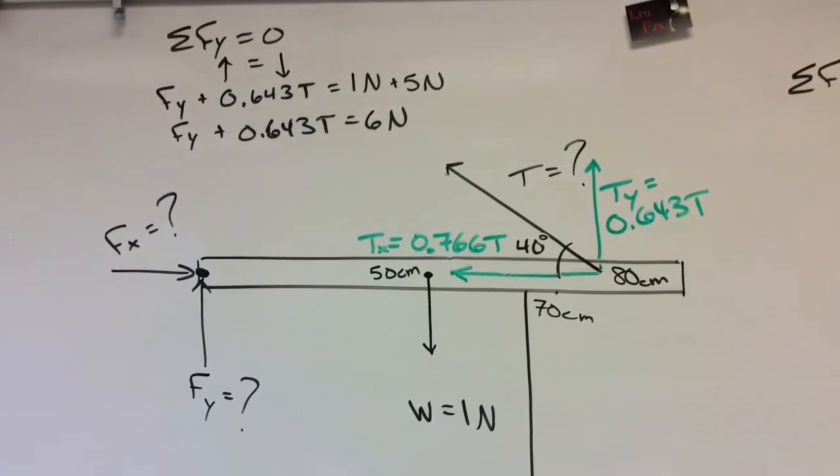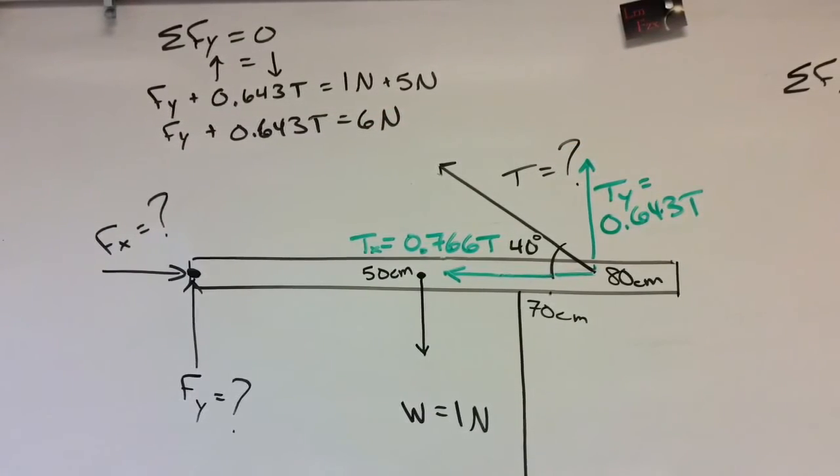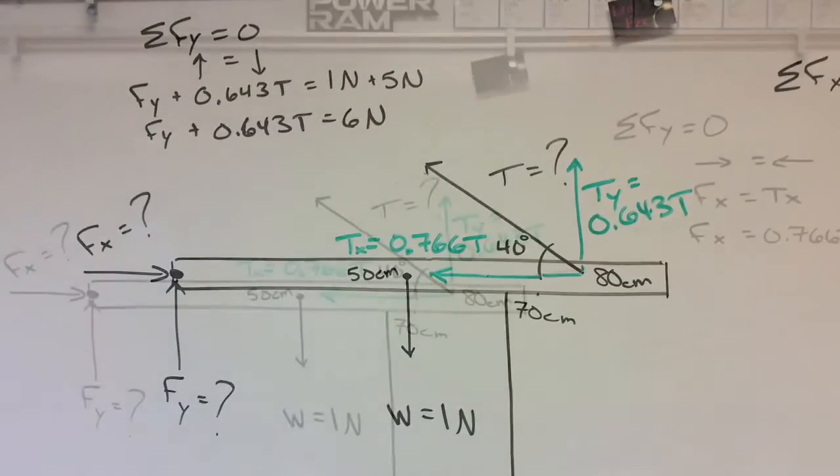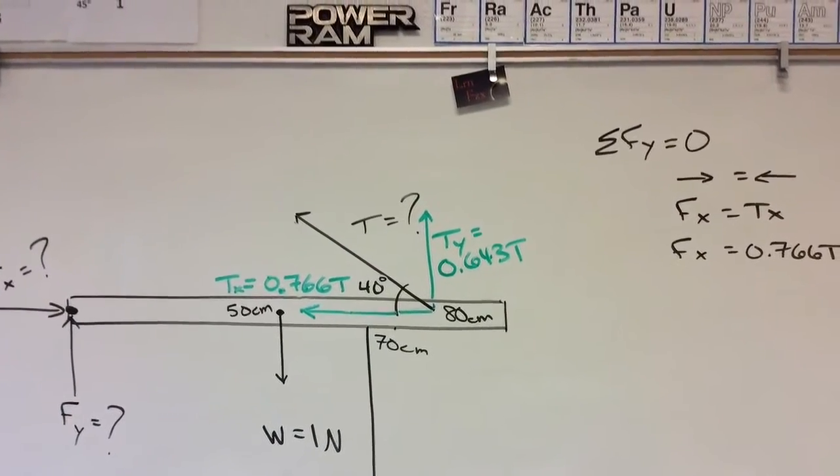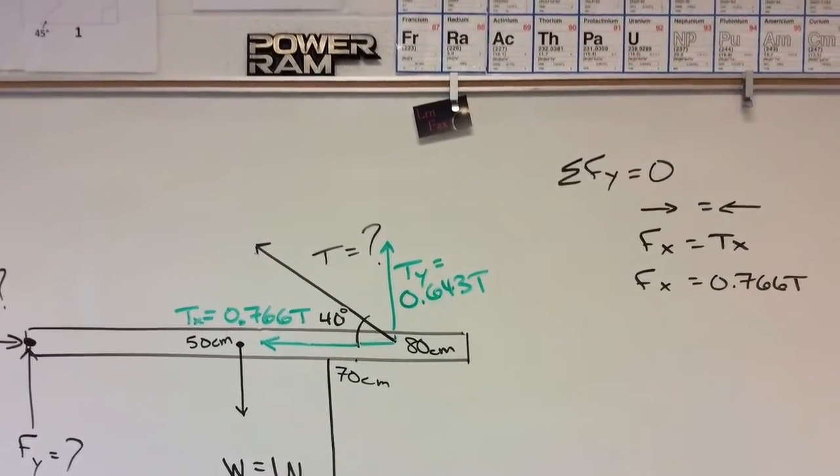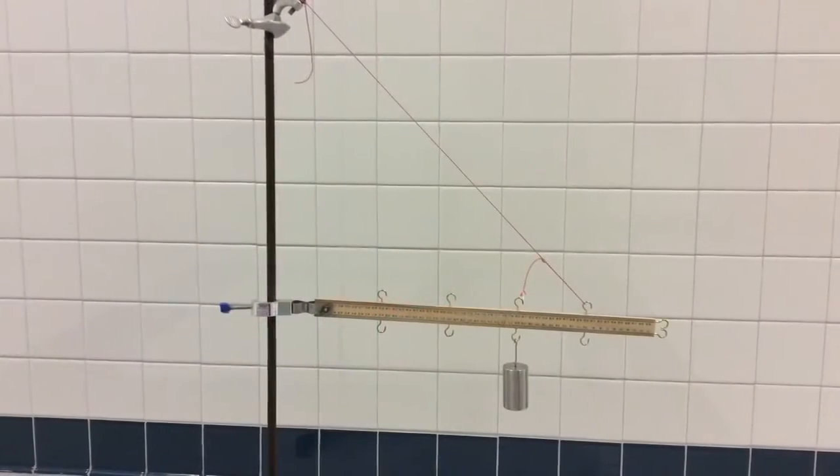And now the first condition for equilibrium in the y direction is to add up all the up forces, set them equal to the down forces. Two unknowns, can't solve it yet, so we move on to another equation. The net force in the x direction: Fx equals Tx, another two unknowns.